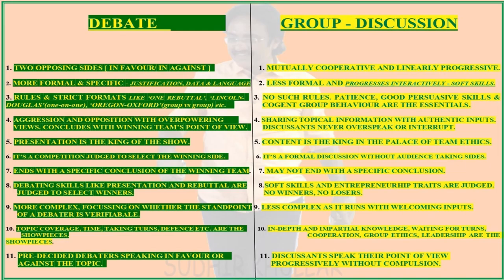Point three: debate has rules and strict formats like one rebuttal, Lincoln-Douglas one-on-one, or Oregon-Oxford group versus group, etc. In group discussion there are no such rules — patience, good persuasive skills and cogent group behaviors are the essentials. Point four: debate involves aggression and opposition with overpowering views, concluding with the winning team's point of view, whereas in group discussion sharing topical information with authentic inputs is required and discussants never overspeak or interrupt.